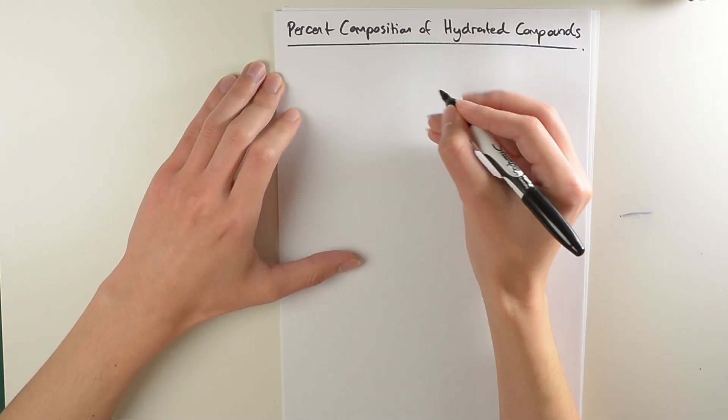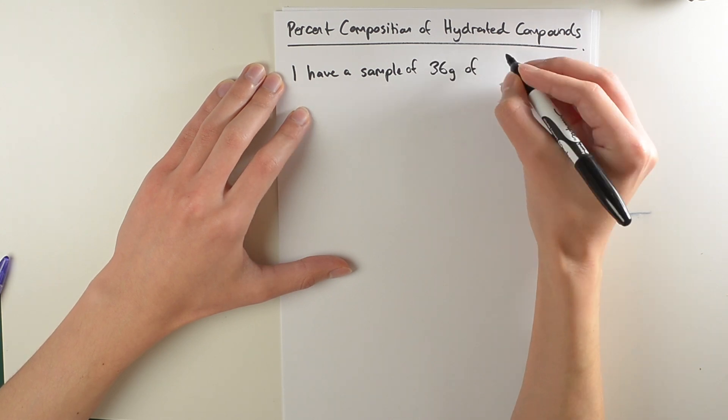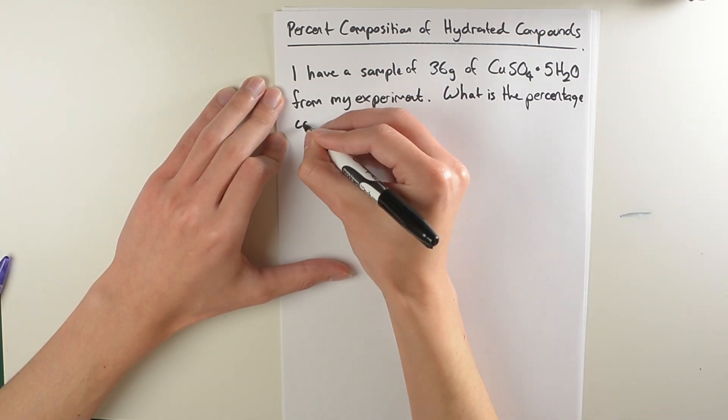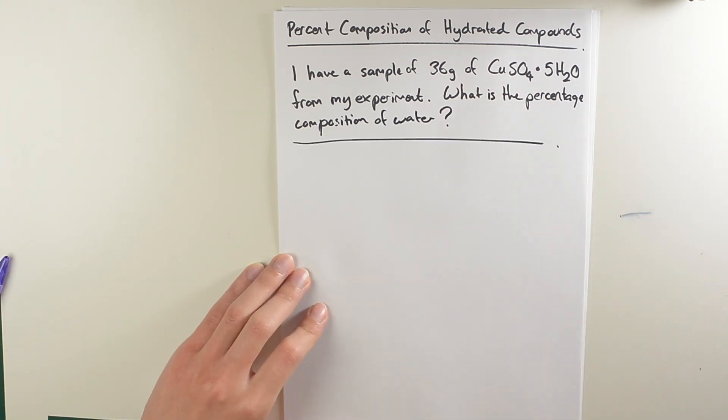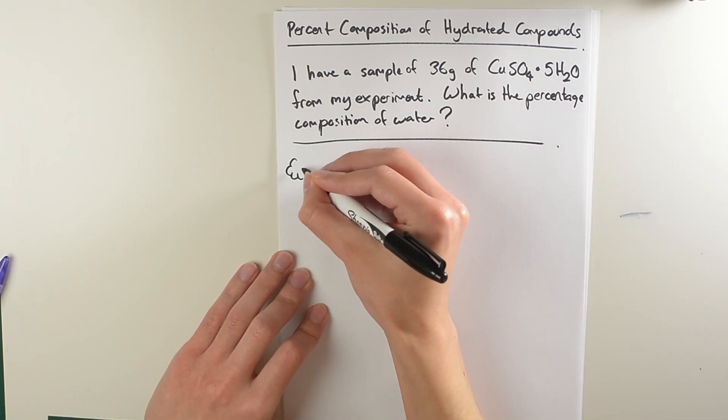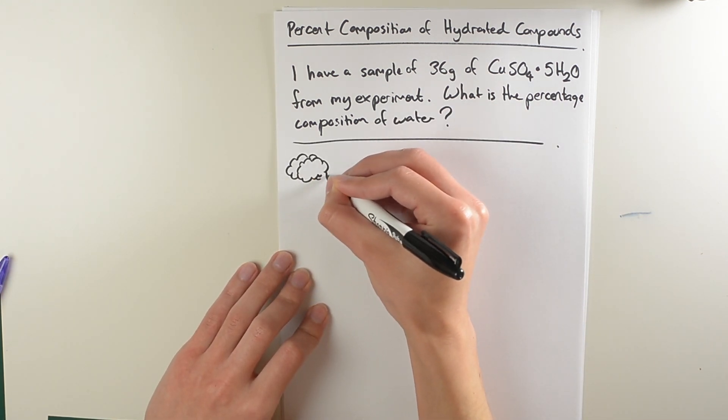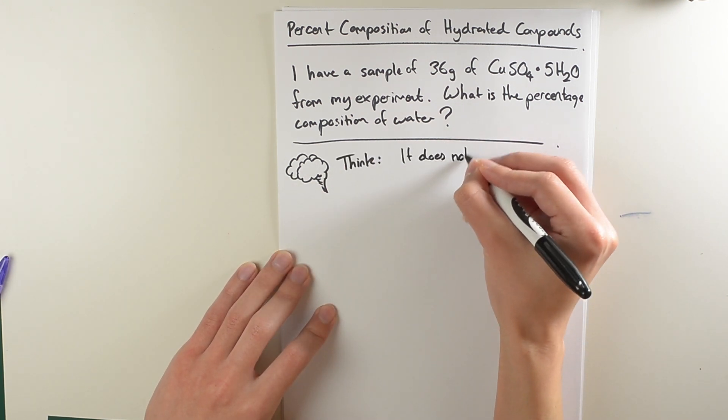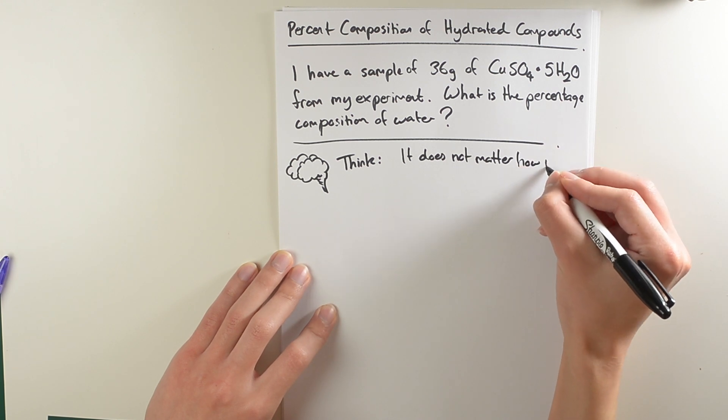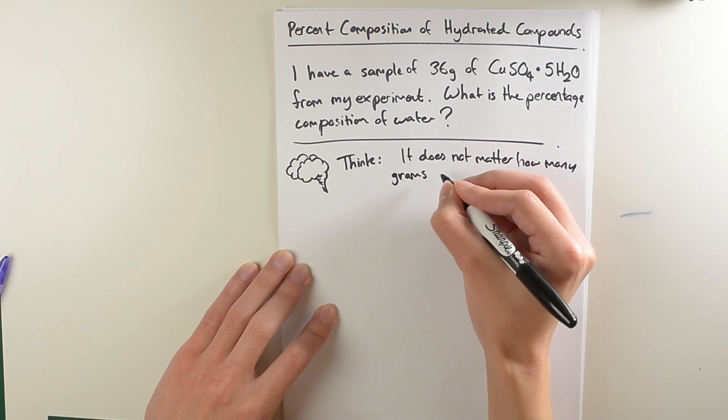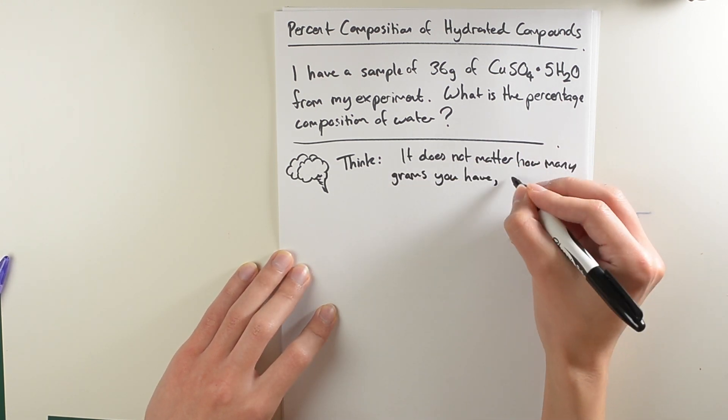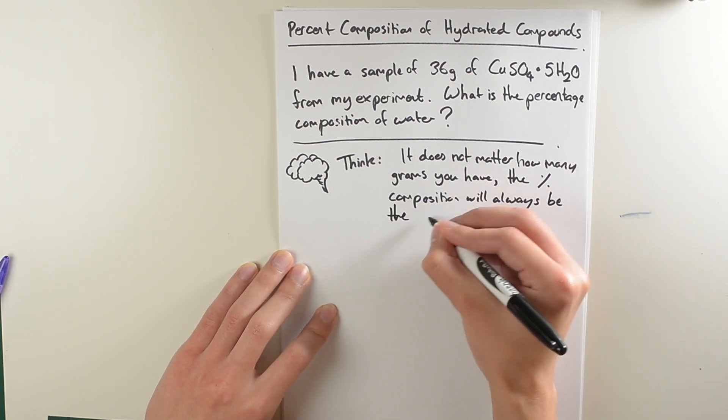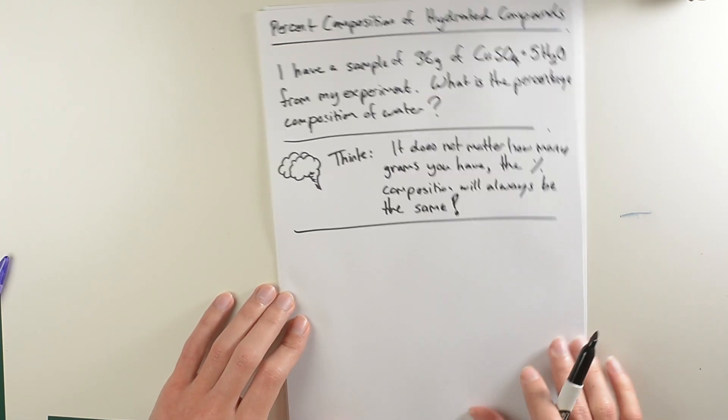If I have 36 grams of copper sulfate pentahydrate from my experiment, what is the percentage composition of the water in my sample? First we have to think about the question. Well, I've been given a mass, the molecule, and I'm asked for the percentage composition. Do I need to calculate the number of moles from the 36 grams to get a percentage composition? Well, no, we don't, because it doesn't really matter how much grams you have, the percentage composition will always be the same.